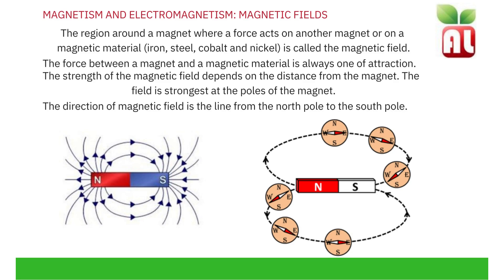Magnetism and Electromagnetism. Magnetic Fields. The region around a magnet where a force acts on another magnet or on a magnetic material, such as iron, steel, cobalt or nickel, is called the magnetic field.